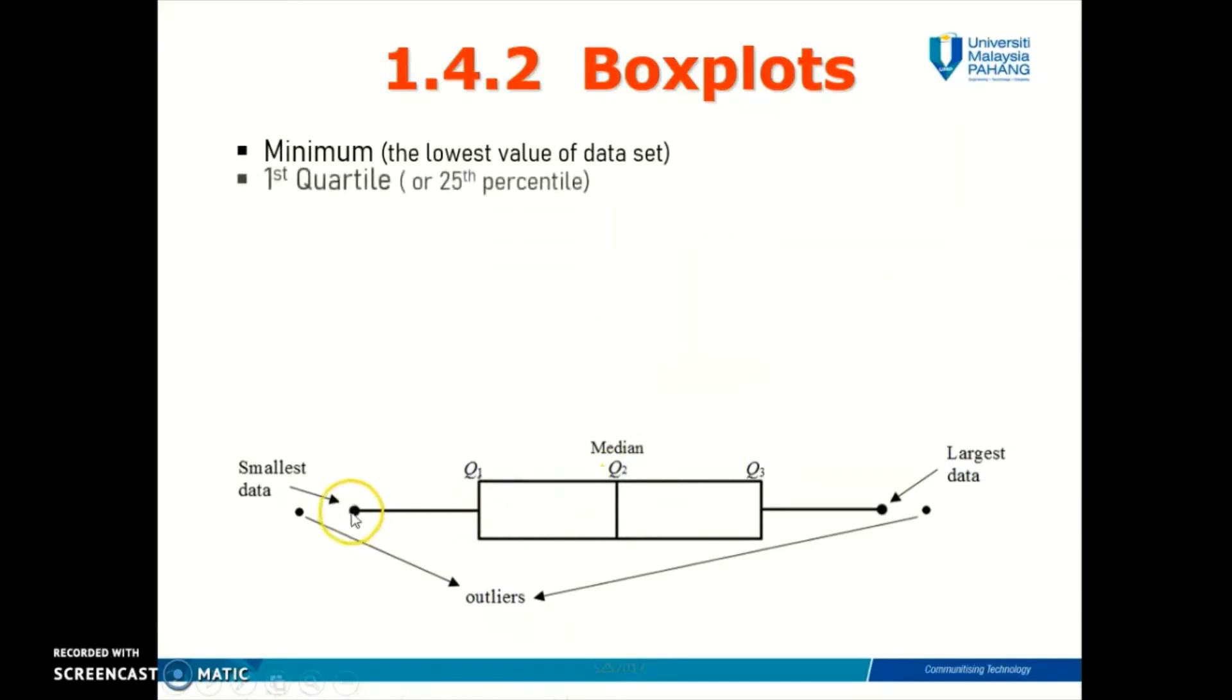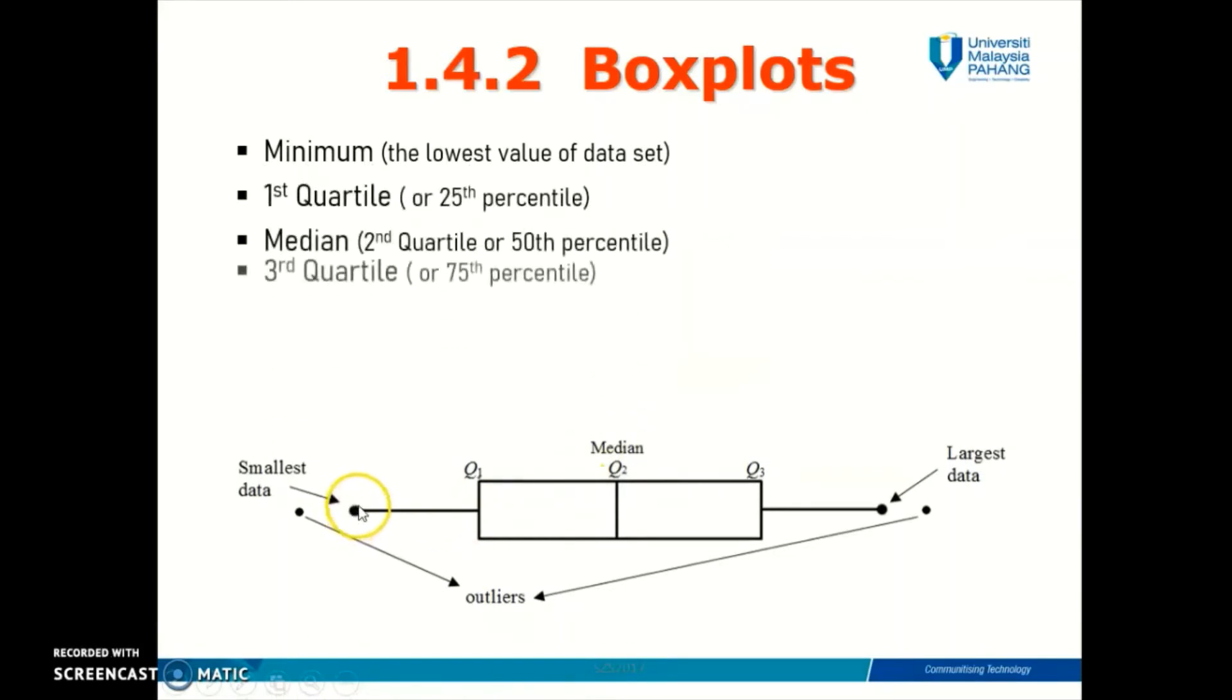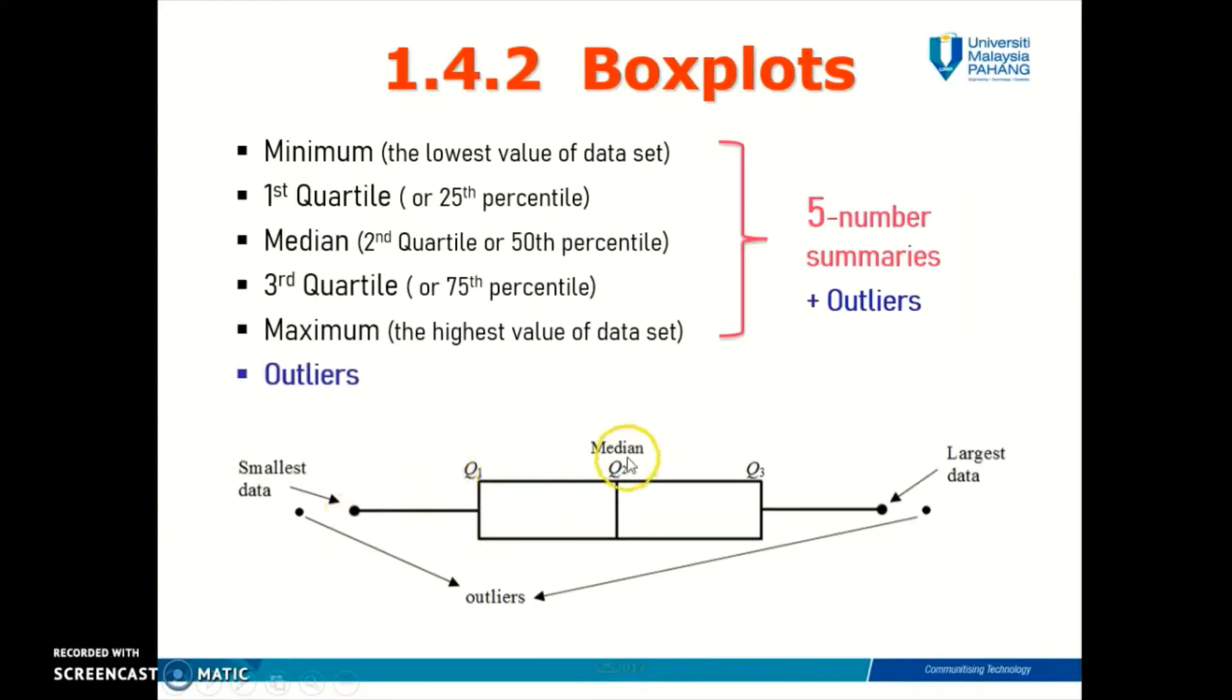The five number summaries start with your minimum value, which is the smallest data in your data set, followed by your quartile one, quartile two which is also the median, quartile three, and finally the maximum value which is the largest data in your data set. If your data contains outliers, you can also plot them using a dot in the box plot.